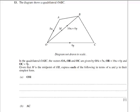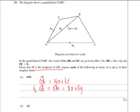In part 13a we are asked to find the vector o to m, given that m is the midpoint of ob. We know that ob is equal to 16x plus 6y, and we know that om is half of ob. So half of ob equals om, which gives us 8x plus 3y.